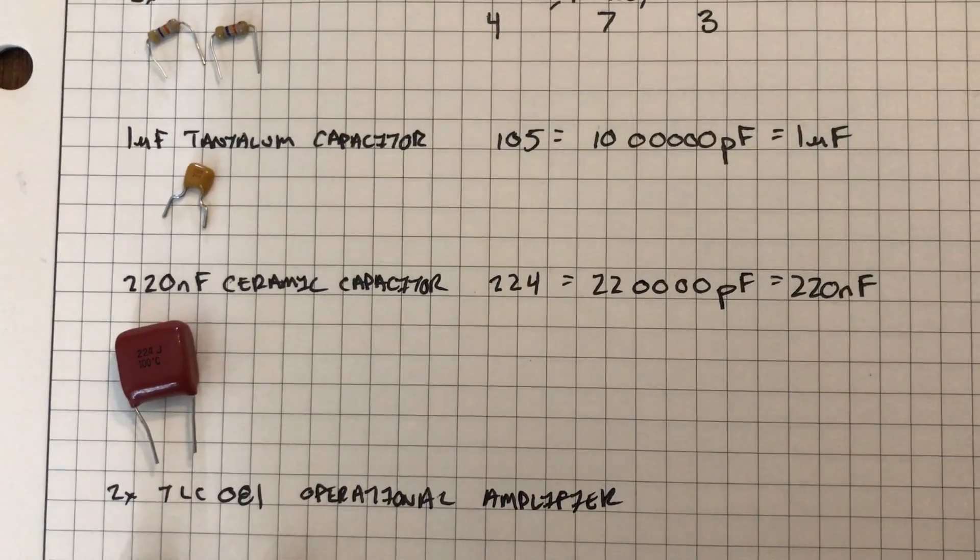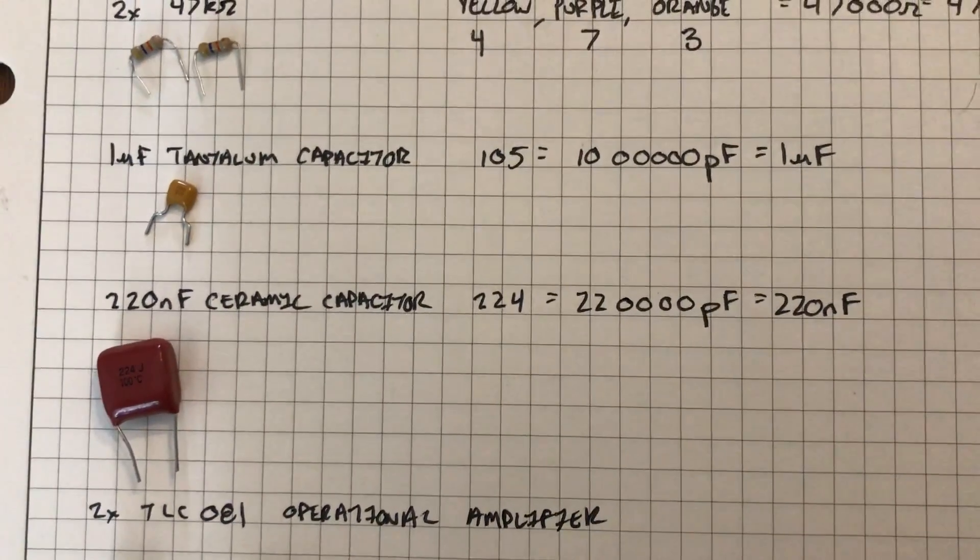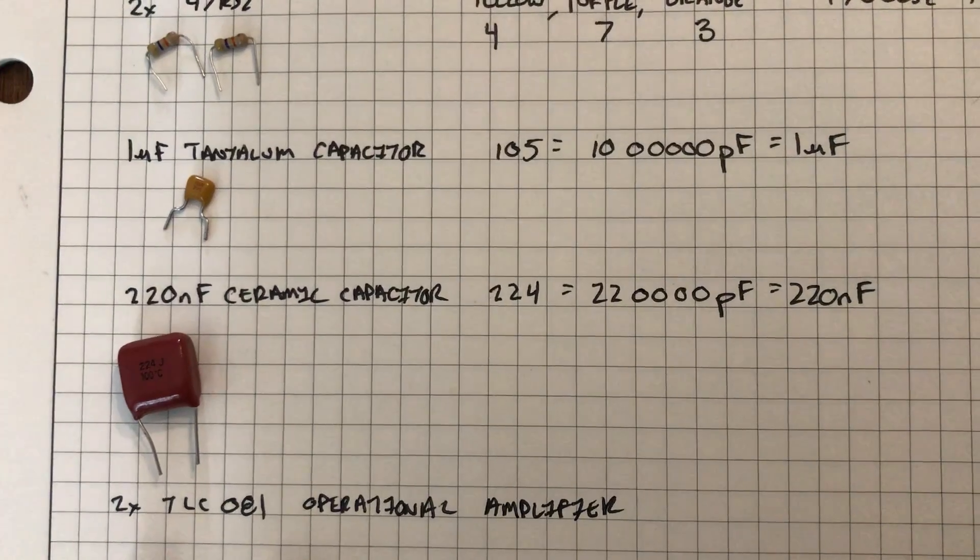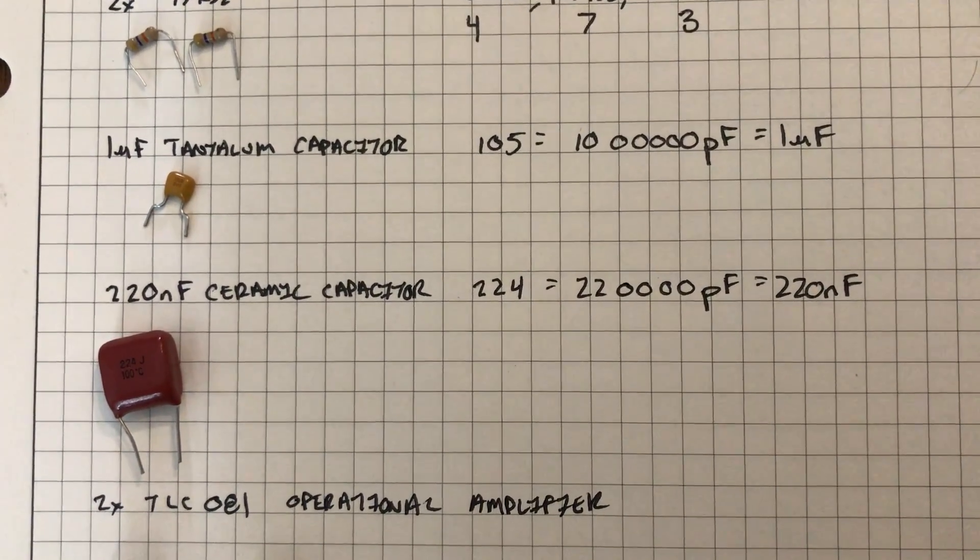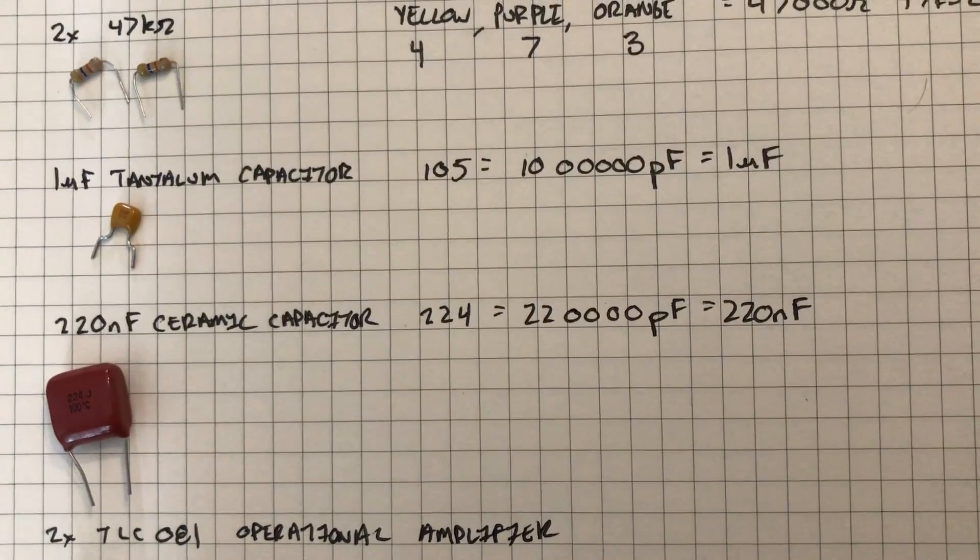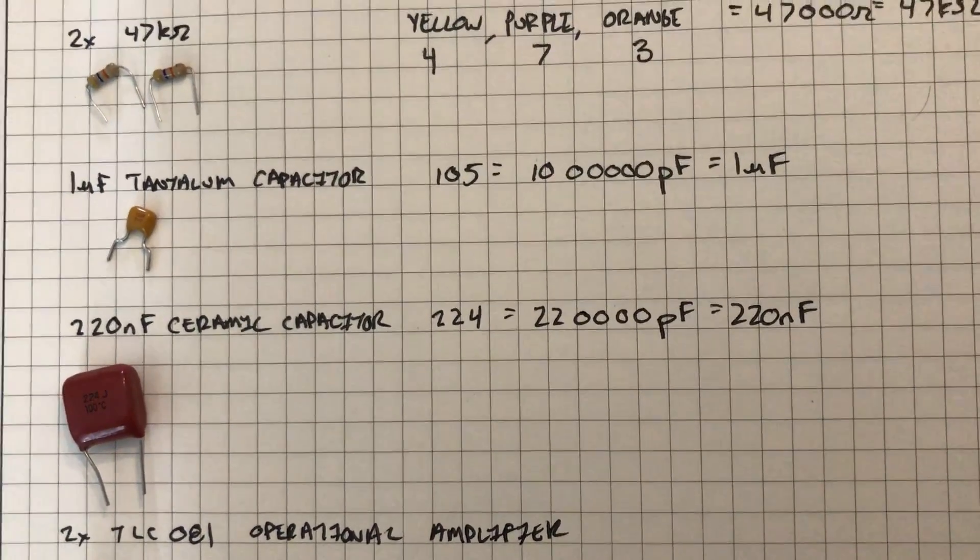The next component I have is a 220 nanofarad ceramic capacitor. I know it's 220 nanofarads because it's labeled with the number 224, which is a 22 with four zeros behind it in picofarads, which gives me 220 nanofarads.